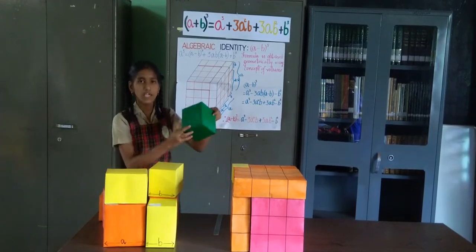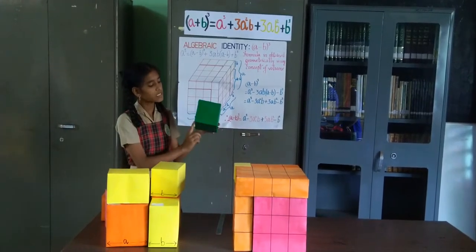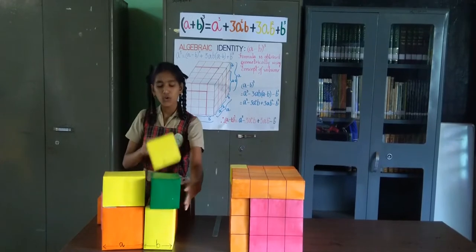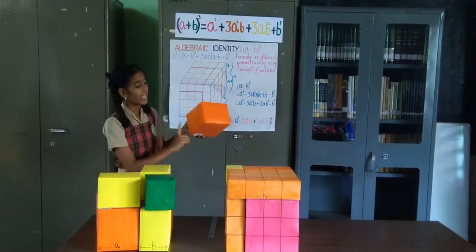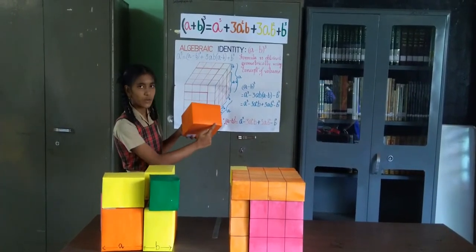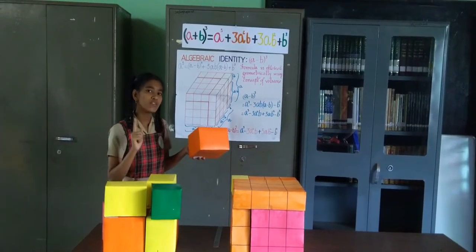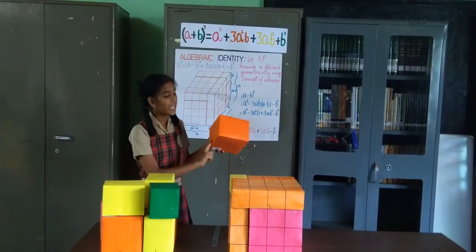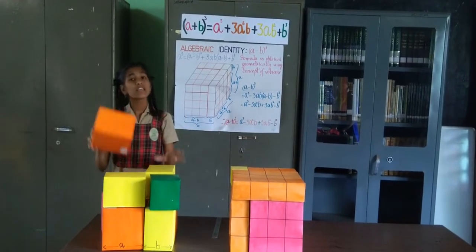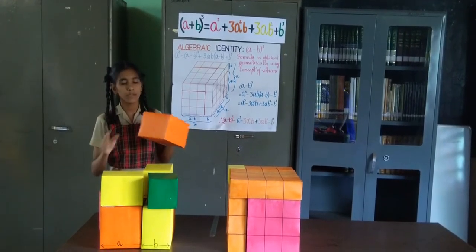A cube of side B units, so its volume is B cube. Then there are three cuboids, each of length A units, breadth A units, and height B units. So the volume of each is A squared B. Since there are three of them, we have 3A squared B.